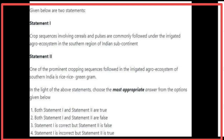Given below are two statements. Statement 1: Crop sequences involving cereals and pulses are commonly followed under the irrigated agro-ecosystem in the southern region of the Indian subcontinent — Statement 1 is true. Statement 2: One of the prominent cropping sequences in the irrigated agro-ecosystem of southern India is rice–rice followed by green gram — Statement 2 is true. Both statements are true.